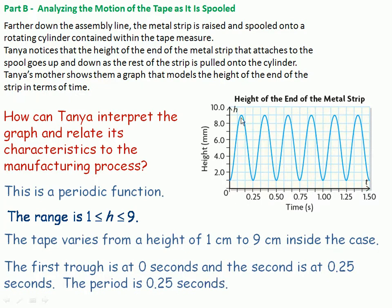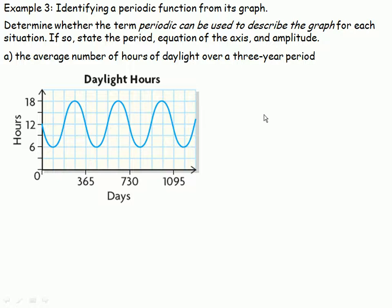Since the first trough is at zero and the second is at 0.25 seconds, the period would be 0.25 seconds. We don't have to start from a trough and go to a trough. We could go from peak to peak, but it is a little bit harder to see that it is exactly 0.25 seconds from here to here.